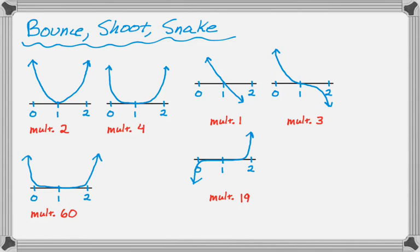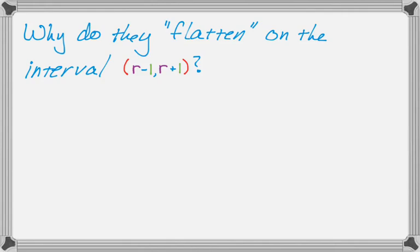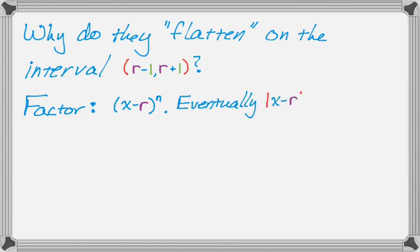Let's talk about why briefly. In another video I'm going to do a couple of examples. If you're not interested, now would be a good time to stop. Why do they flatten out on the interval between r minus 1 and r plus 1, where r is the root? It stems from the fact that the factor looks like this. The factor is x minus r to the n.